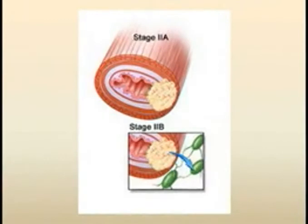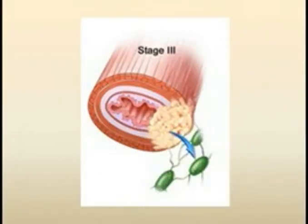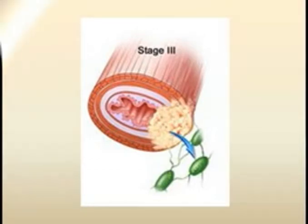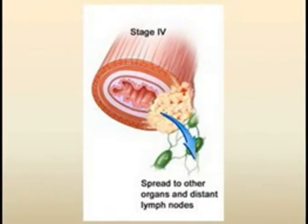Stage 2 cancer involves the deeper layers of the lining of the esophagus or it has spread to nearby lymph nodes. Stage 3 cancer denotes invasion more deeply into the wall of the esophagus or has spread to tissues or lymph nodes near the esophagus. Finally, stage 4 depicts cancers that have spread to other parts of the body. This stage usually implies clinical trials of chemotherapy and radiation, where surgery is used only for palliation.